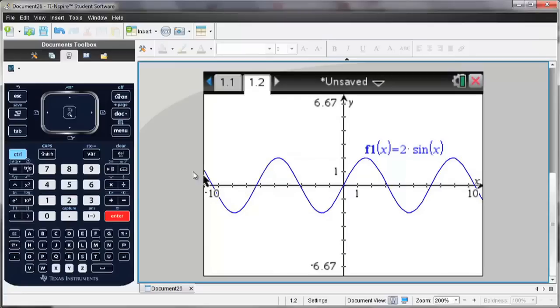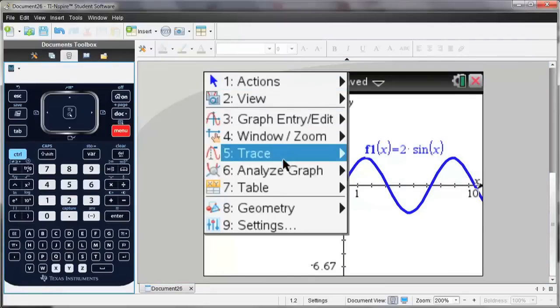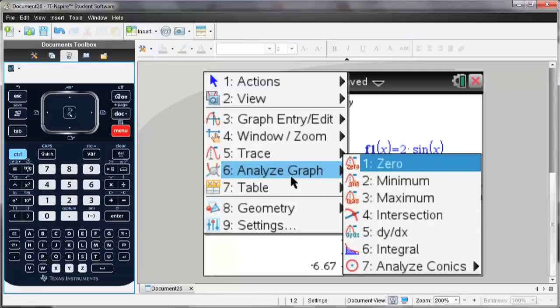And then I can also change the window, or if I wanted to define the value of the integral between two points. I hit menu, analyze graph, and then number 6 is integral.